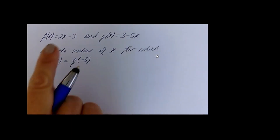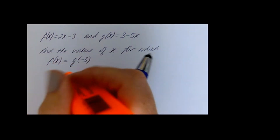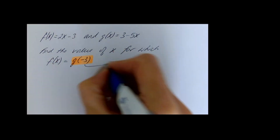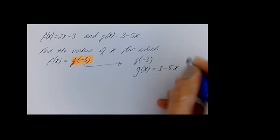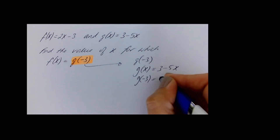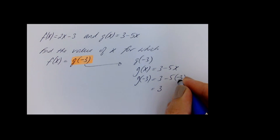Now consider: f of x equals 2x minus 3, and g of x equals 3 minus 5x. Find the value of x for which f of x equals g of minus 3. We break it down step by step. First, work out g of minus 3: replace x with minus 3, giving 3 minus 5 times (minus 3), which is 3 plus 15, equal to 18. So g of minus 3 equals 18.